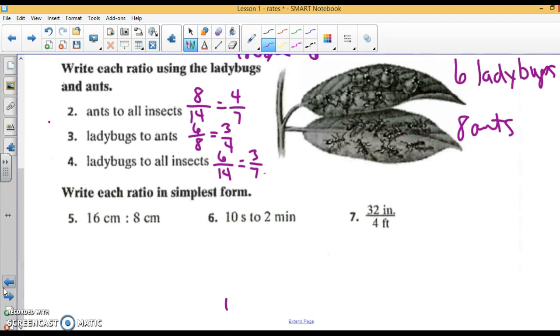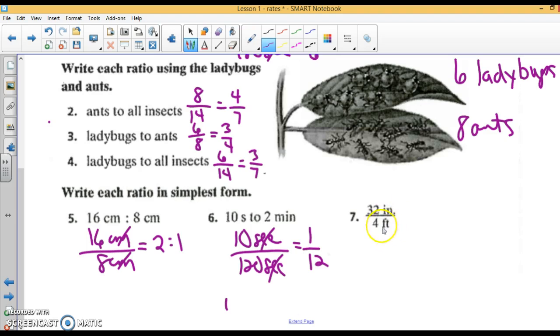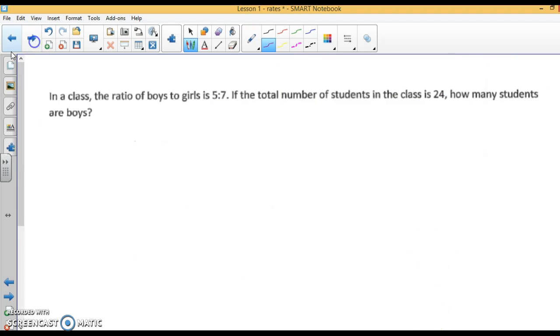Write these each in simplest form. 16 centimeters to 8 centimeters - centimeters cancel out, I get 2 to 1. 10 seconds to 2 minutes - 10 seconds to 2 minutes is 120 seconds, seconds cancel, that'll be 1/12. Change these both to inches: 32 inches to 4 feet is 48 inches. Inches cancel out and I am left with 2/3.